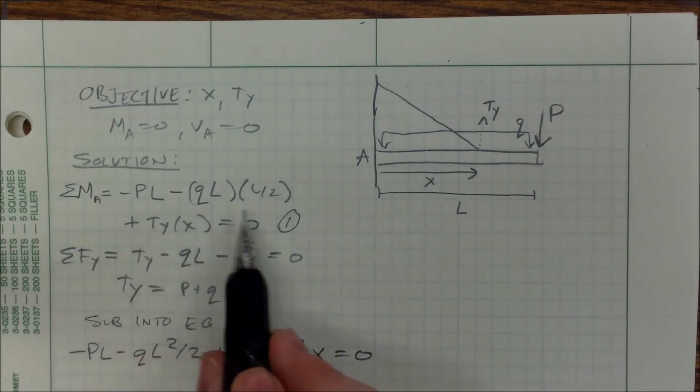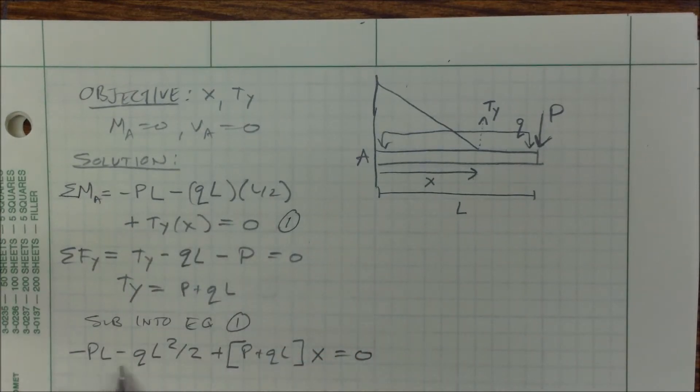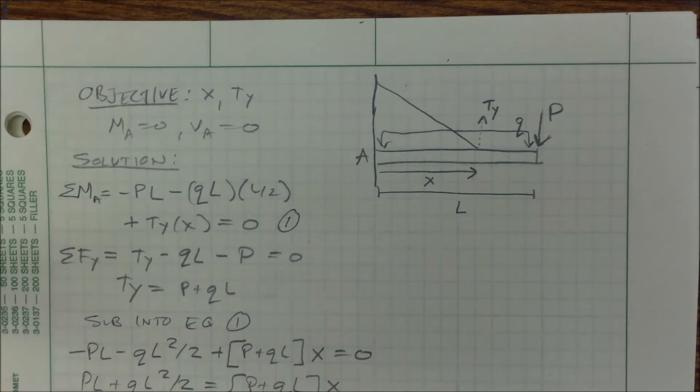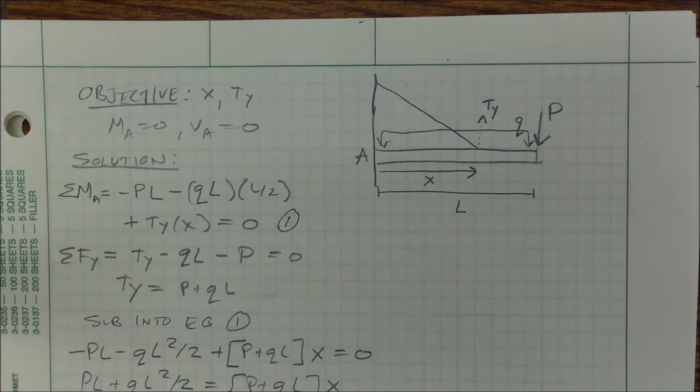Now I've gotten rid of TY in equation 1. I can just solve right for X. I can divide by P plus QL, and this is my answer.